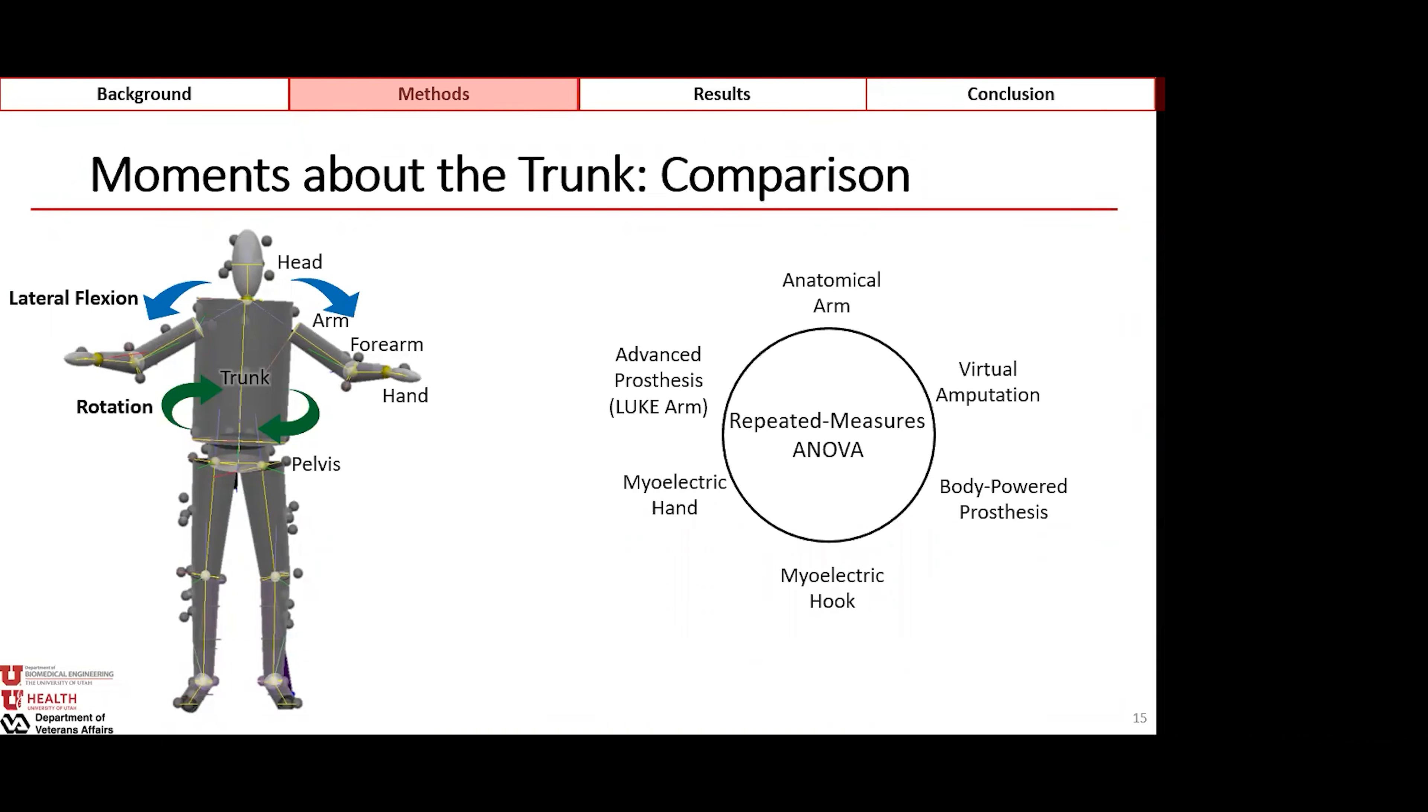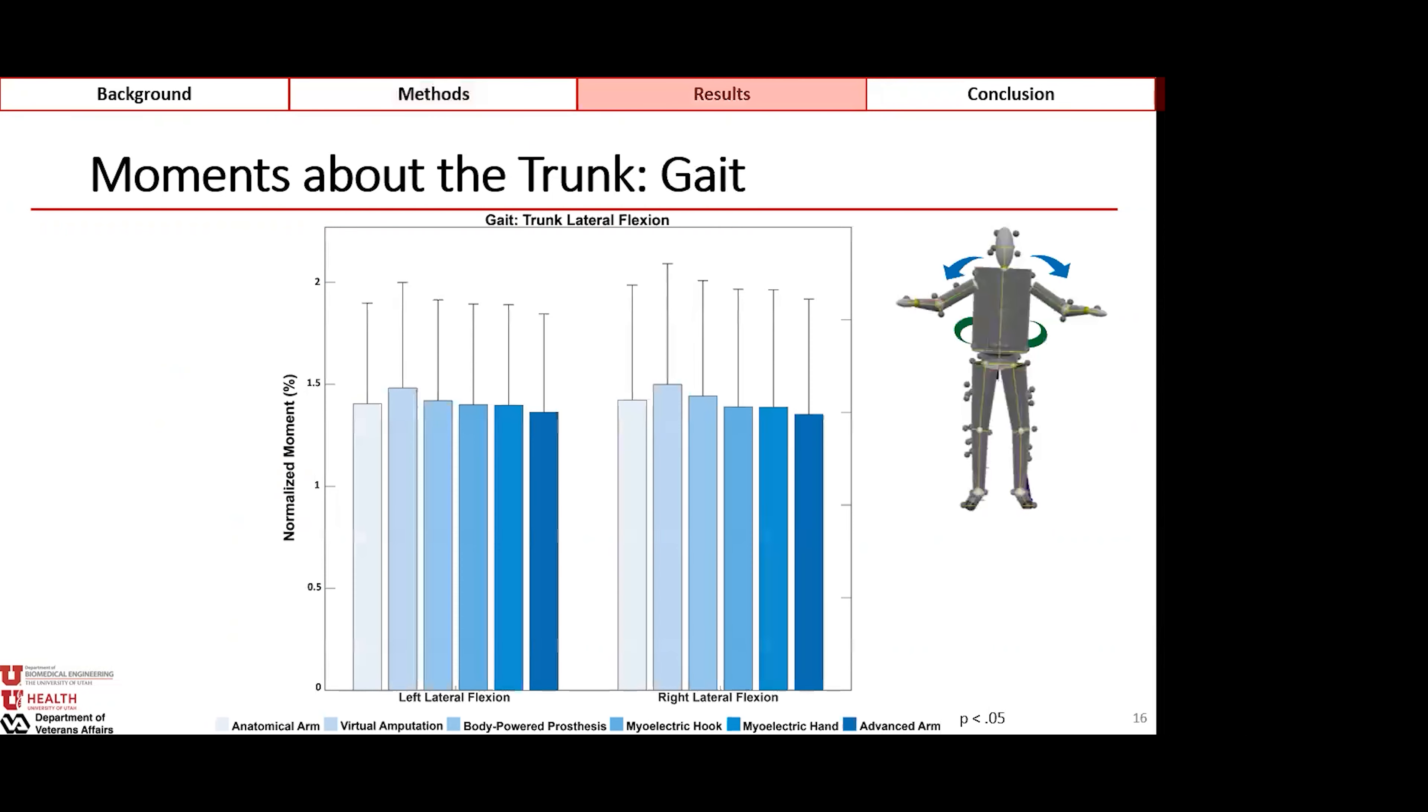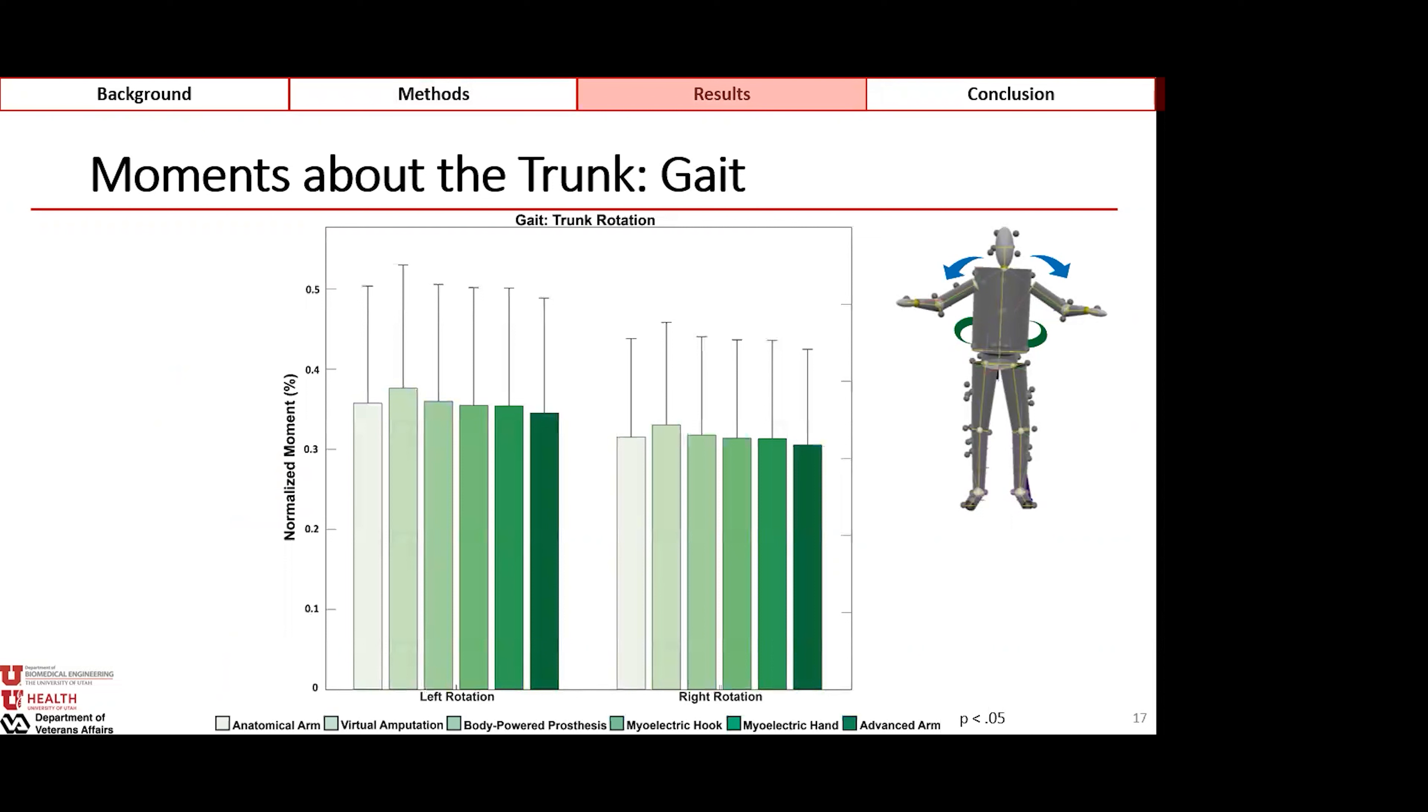We compared these moments between each of the loading parameters using repeated measures ANOVA test, and the results are as follows. For the least intense motion, which is gait, we see that there's really no instance of significant difference in the loading parameters and the moments they cause in lateral flexion, and we see that same thing happening in rotation. We're looking at this from left to right, the anatomical arm, the virtual amputation, and then each of the prosthetic devices in increasing complexity and weight.